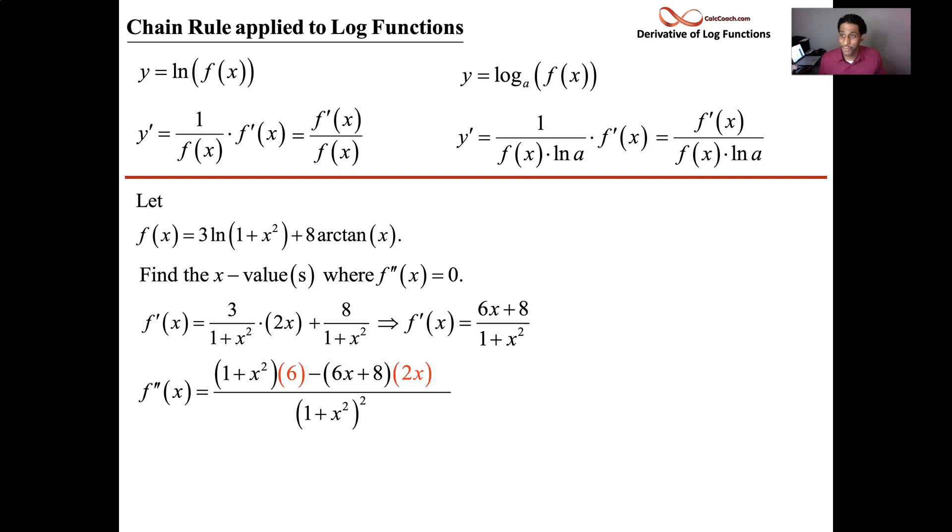You've got the second derivative. We're going to simplify. 6 plus 6x squared minus 12x squared. Careful with this next one, minus 16x. Put the squares together. Got a nice quadratic up there: negative 6x squared minus 16x plus 6. That's our second derivative.